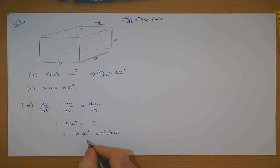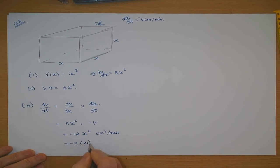Now in order to work that out, they have to tell me what x is. At x = 10, that's -12 times 10², which is 100, so -1200 centimeters cubed per minute.